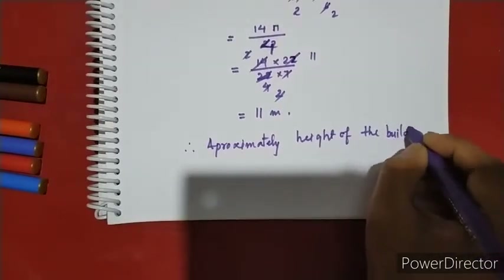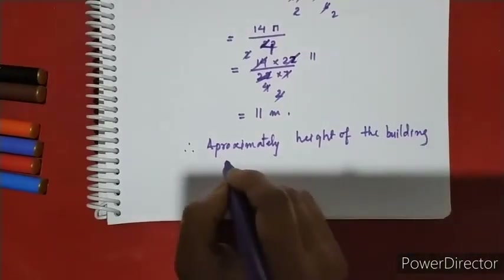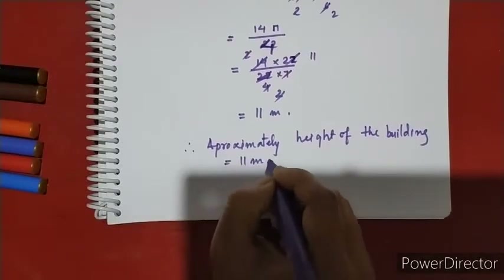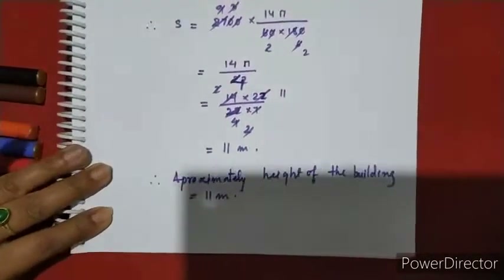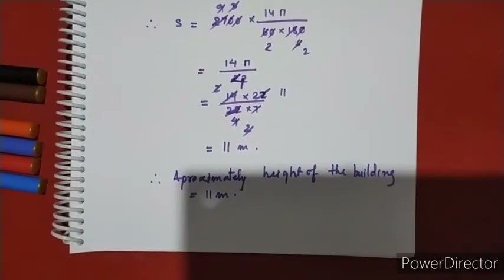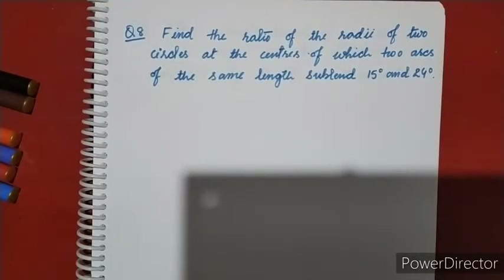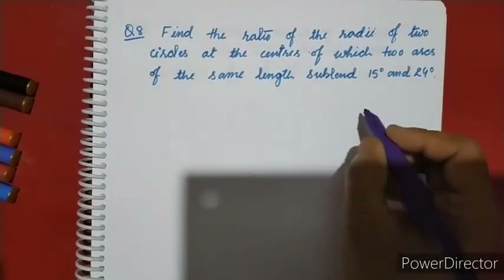Next question: Question number 8 — find the ratio of the radii of two circles at the centers of which two arcs of the same length subtend angles of 15 degrees and 24 degrees.